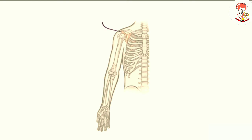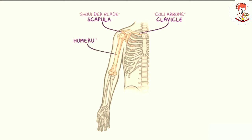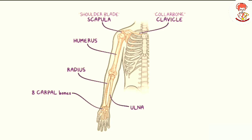First, there is the pectoral girdle, which consists of two bones: the scapula, also called the shoulder blade, and the clavicle, also known as the collar bone. Then there is the arm, which only has one bone called the humerus. Then we have the forearm, which has two bones called the radius and ulna. Next, there is the wrist, which has eight carpal bones, and finally the hand, which has five metacarpal bones and the fingers, which have 14 phalanges in total.